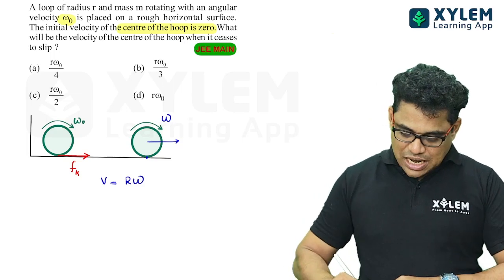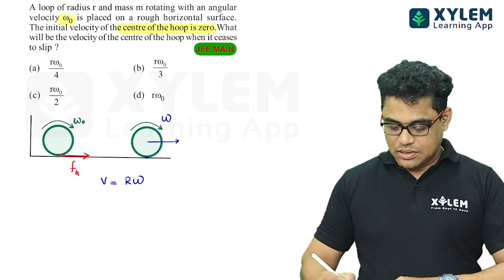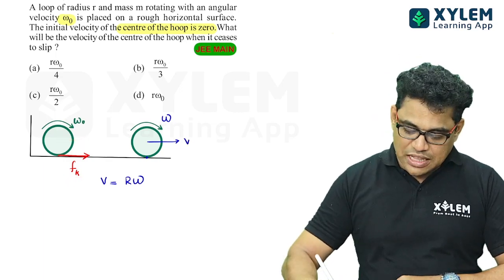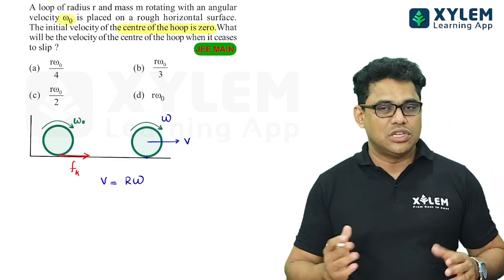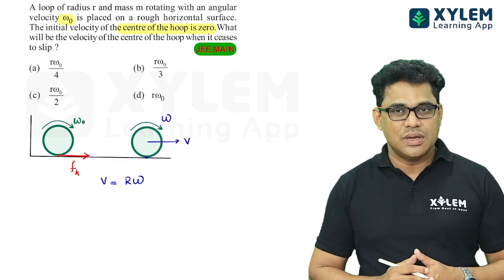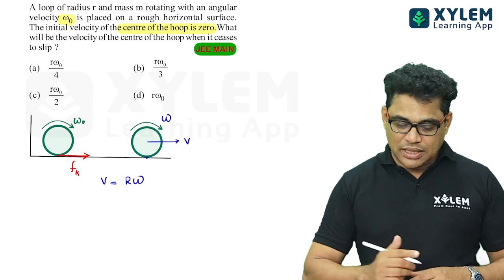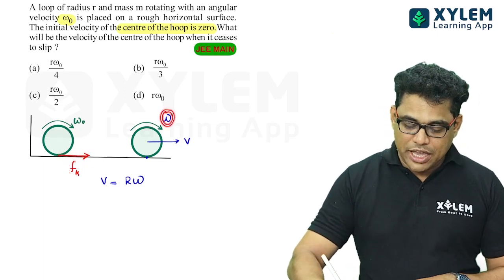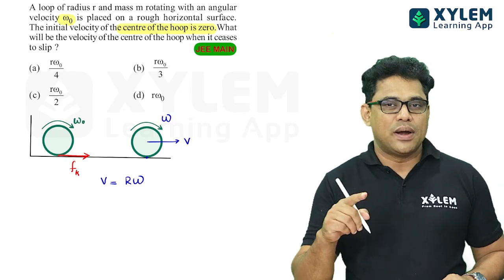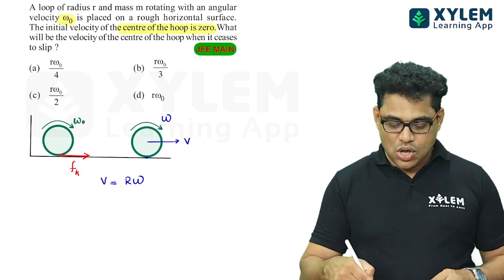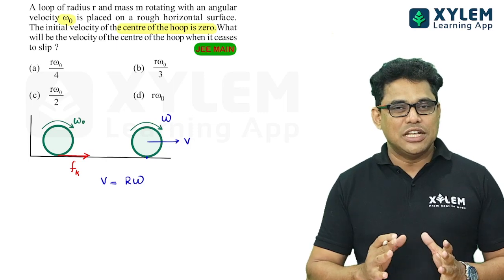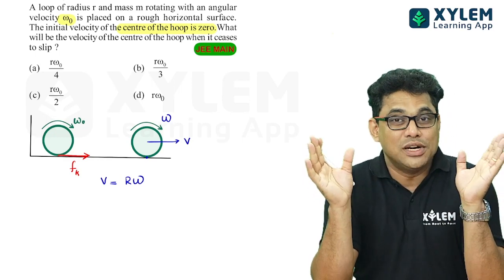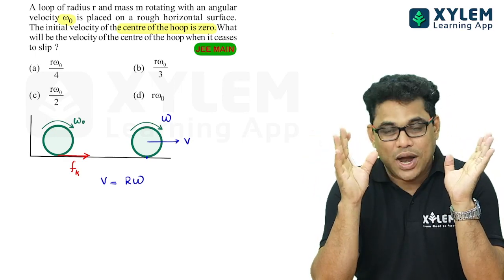If you have a horizontal force or kinetic friction, you will have an acceleration and you will have a velocity. We have the equation V equals U plus at. For the kinetic friction torque, we have the equation omega equals omega_0 plus alpha*t. We could use these kinematic equations, but it will take a lot of time. This is a simpler, more elegant method.